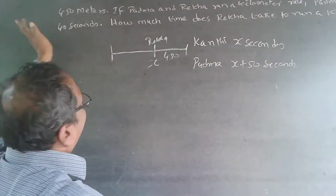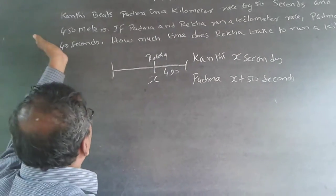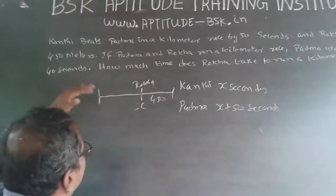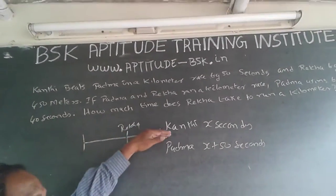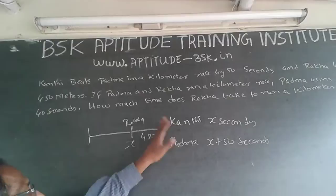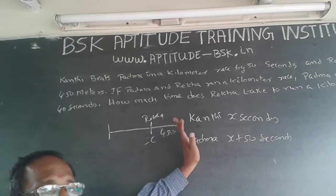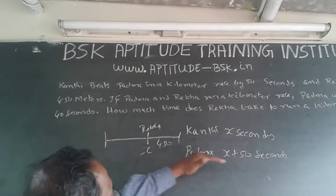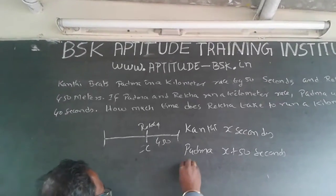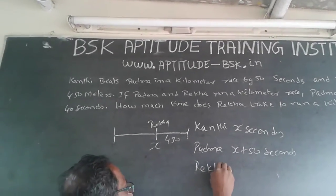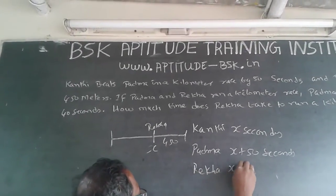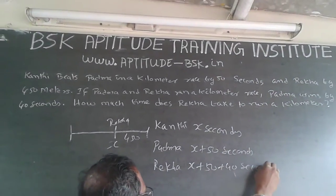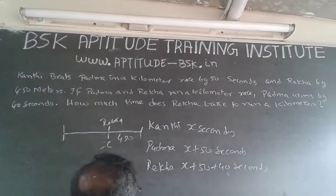Now, Padma in a kilometer race will beat Rekha by 40 seconds. This is a kilometer distance — you don't have to make them run again separately. Padma takes X plus 50 seconds; since she beats Rekha by 40 seconds, Rekha will take 40 seconds more than Padma — that is, X plus 50 plus 40 seconds, so Rekha takes X plus 90 seconds for the full kilometer.